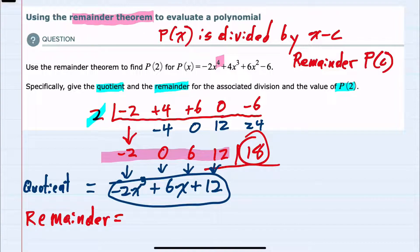My remainder would be that last digit, 18. And from the remainder theorem, that also tells me that p of 2 would be 18. So we have answered all 3 questions.